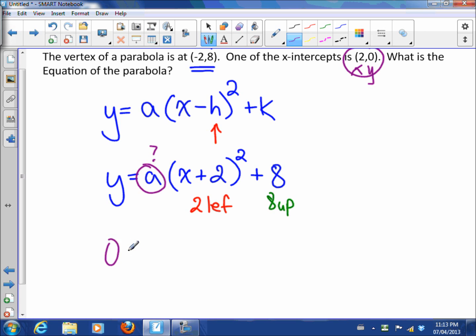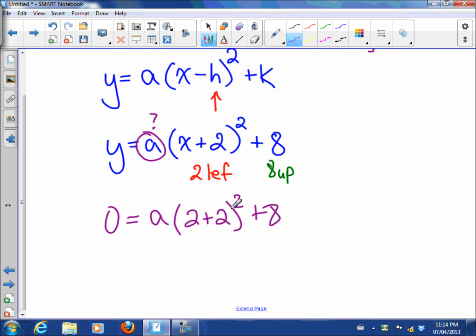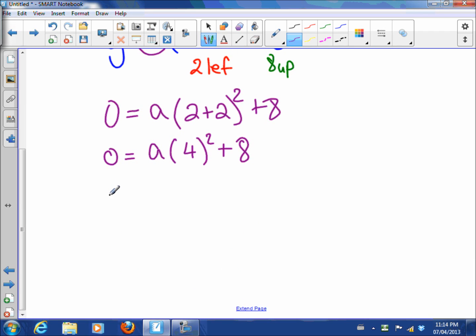So y is 0, a I don't know, x is 2, so 2 plus 2 squared plus 8. So now let's do brackets first. We're going to follow BEDMAS. So 0 is a and then 4 squared is 16 plus 8.